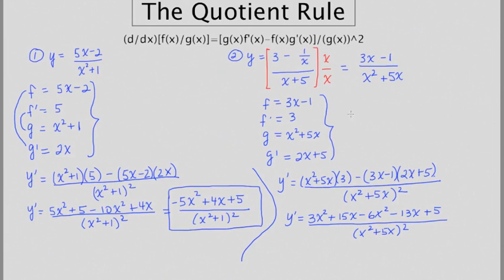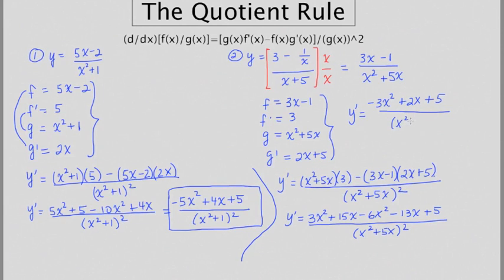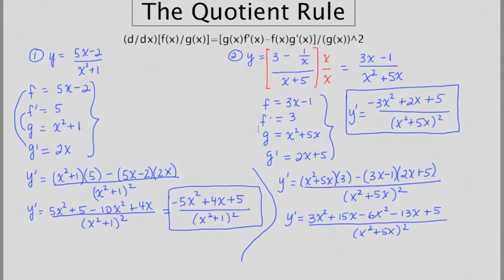Finally, the derivative is going to be negative 3x squared plus 2x plus 5, all over x squared plus 5x quantity squared. That's the derivative using the quotient rule — two examples done. They look a little scary at points, but they all kind of look like this in the end with this denominator squared. Some people like to say it's the product of the inside functions minus the product of the outside functions.